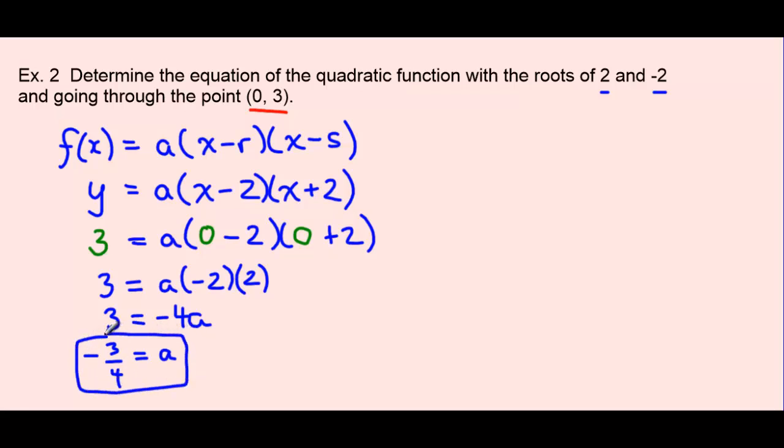And this is great, because now we can put this a value back into our original equation. So we're going to substitute that back into the original equation and then get it into standard form. So we have f(x) equals negative 3 fourths times (x minus 2)(x plus 2).